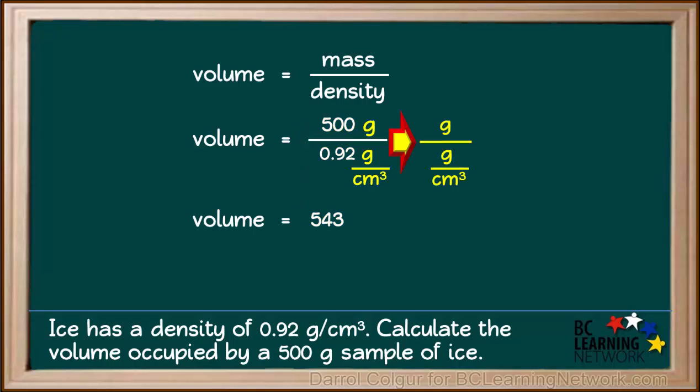In order to find the correct unit for our answer, we divide grams by grams per cubic centimeter. The unit grams per cubic centimeter is a fraction, so this is like dividing by a fraction. In order to divide by a fraction, we invert the divisor and multiply. So when we divide by grams over cubic centimeters, we multiply by cubic centimeters over grams. Grams will cancel out, leaving us with just cubic centimeters.